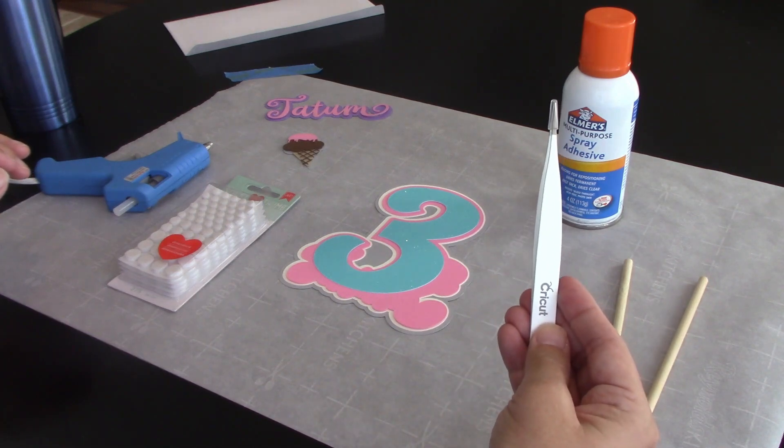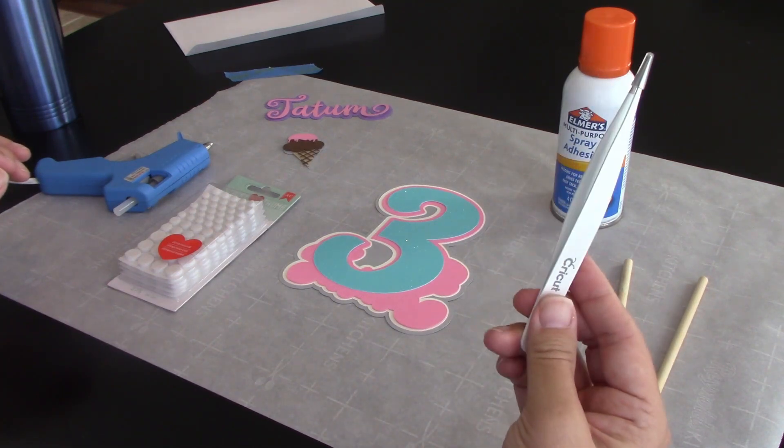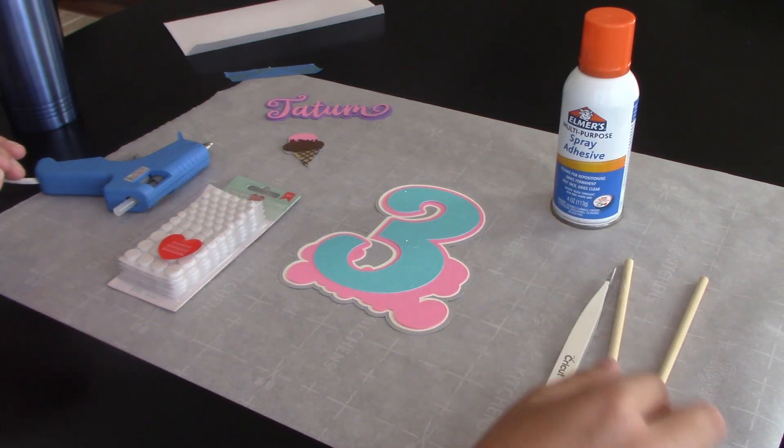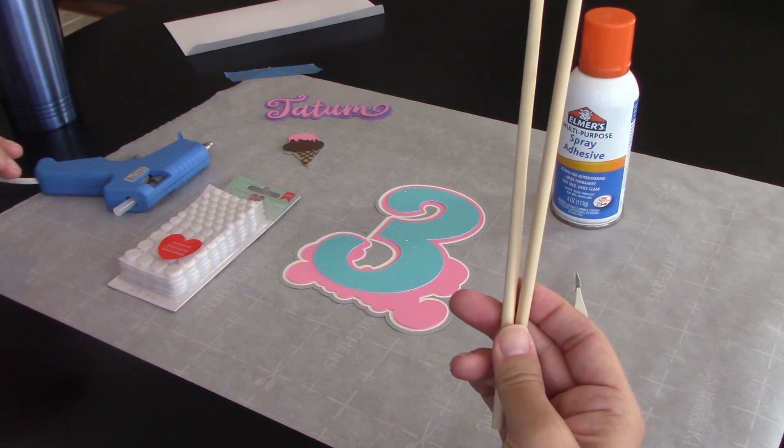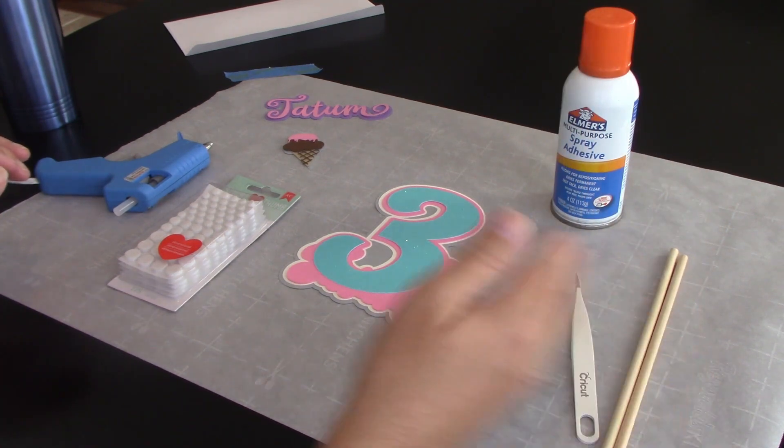Some tweezers, they don't have to be Cricut tweezers, they can be the tweezers that you pluck your eyebrows with, it doesn't matter. The little sticks so that you can put this on top of your cake.